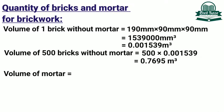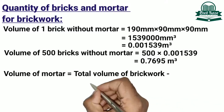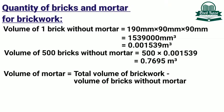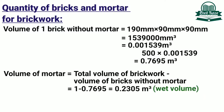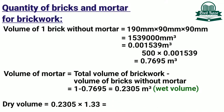Volume of cement mortar will be equal to total volume of brickwork minus volume of bricks without mortar, which will be equal to 1 minus 0.7695 = 0.2305 m³, which is the wet volume. To calculate the quantity of cement mortar, we need to convert the wet volume to dry volume by multiplying by a factor of 1.33. So dry volume will be equal to 0.2305 × 1.33 = 0.306565 m³.